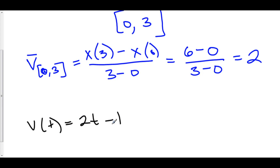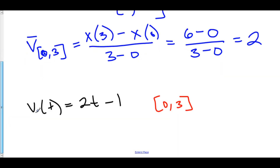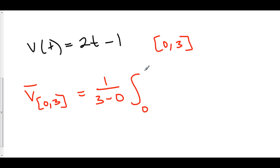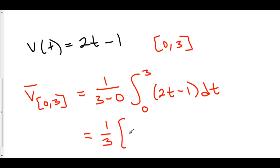If I want to find the average velocity still on zero to three, then I have to use the average function value since we already have velocity here. So we take one over b minus a times the integral from a to b of velocity, which is two t minus one dt. The antiderivative of two t minus one is t squared minus t, evaluated from zero to three.